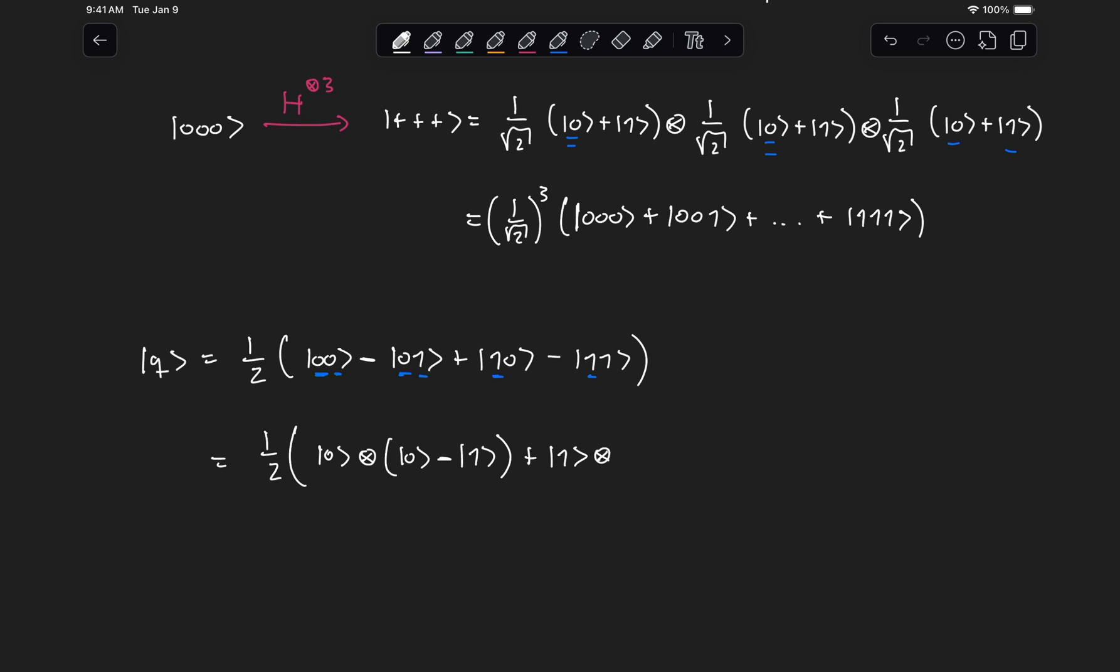And then plus, we can now factorize this one. So we get one, tensored, and then we are going to have zero, minus one. And here we can see that these two are the same. So we can factorize this further. So we can do this equal to one half of zero for this one right here, plus one for this one right here.